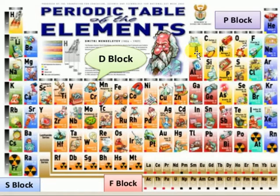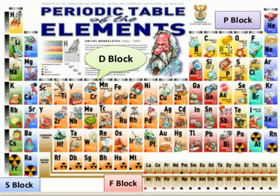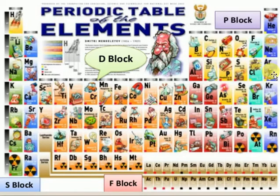The Boron family is called the Electron Deficient family. The Carbon family is called the Electron Precise family. The Nitrogen family is also called Pnicogens. The Oxygen family is called Chalcogens — ore-forming materials. The Fluorine family is called Halogens — salt-forming materials. The Helium family is called Noble Gas elements. Noble gases are also called inert gases.